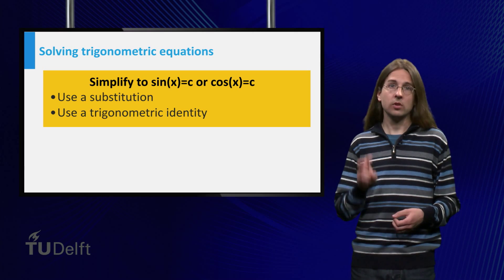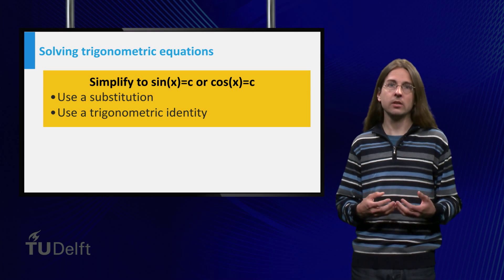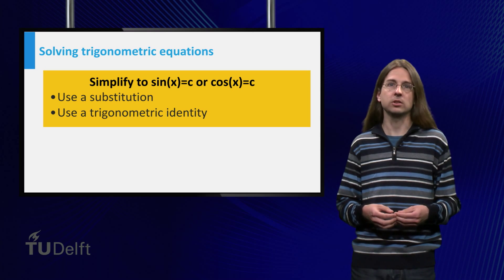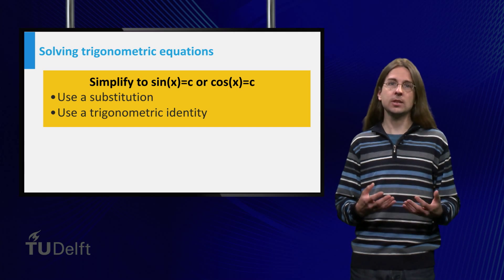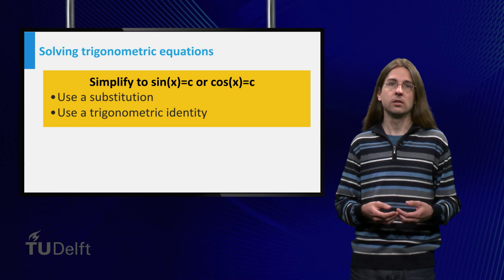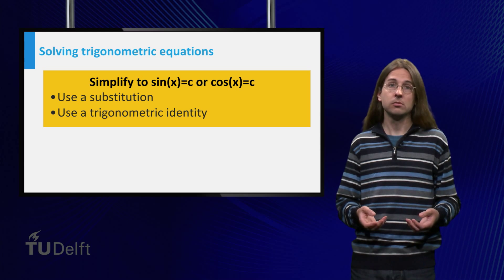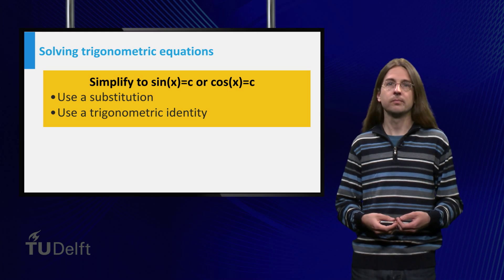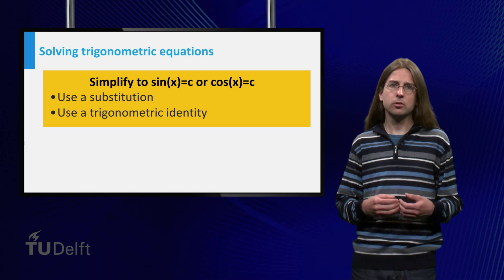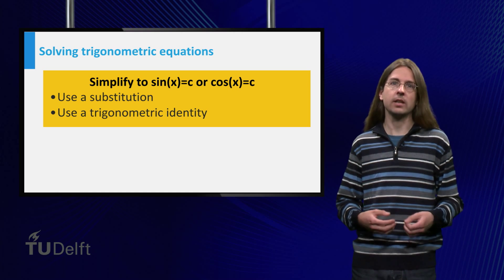In summary, there are two important aspects to solving equations involving trigonometric functions. To solve a more complex equation, you need to first simplify it to a basic equation. Use the substitution whenever this is possible. Remember that no x's are allowed in the resulting equation. Otherwise you should look for a simplifying trigonometric identity.